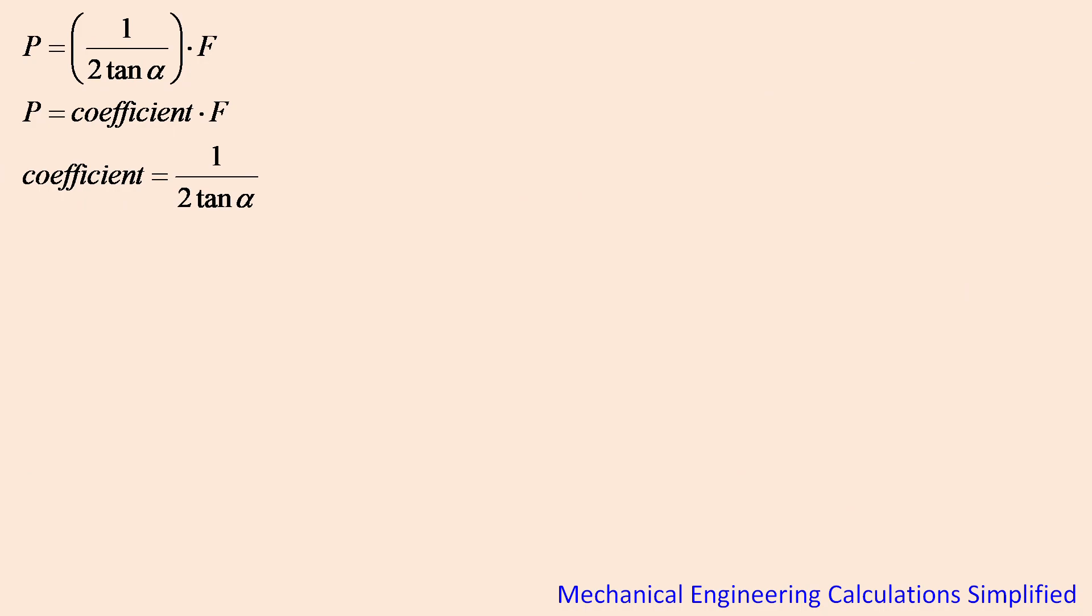So that particular coefficient I am calling it as 1 divided by 2 tan alpha and that depends, you can see this coefficient is inversely proportional to tan alpha. So I'm just trying to understand what happens with the alpha value being from starting from 0 to say 90 degree.